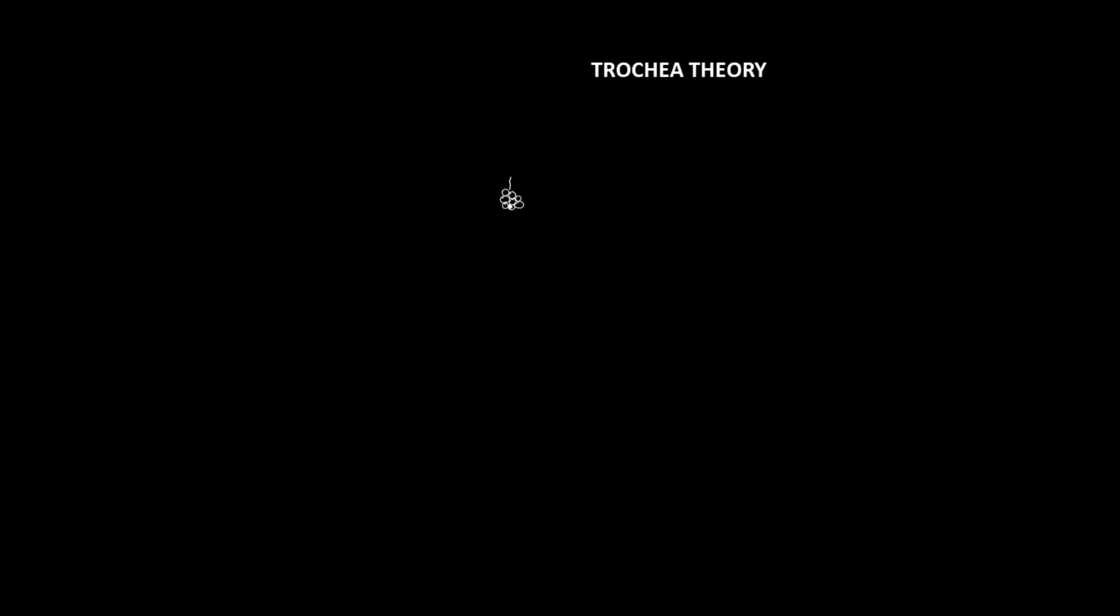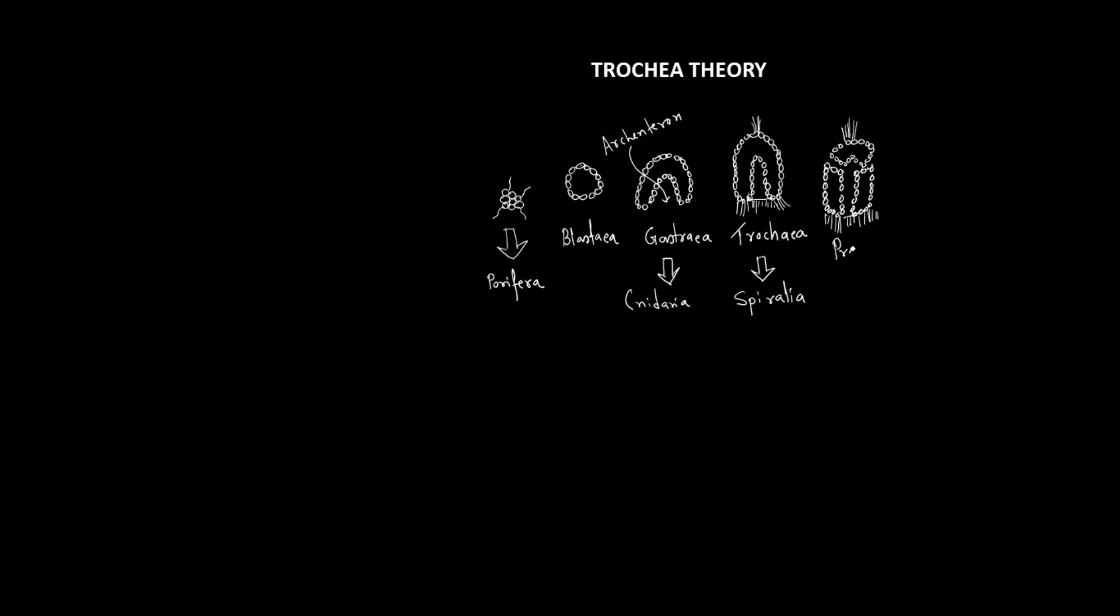Trochaea theory, one variant of gastraea theories that does avoid some of the problem areas has recently been advanced by Nielsen and Nørrevang, 1985. They suggest that a common monociliate gastraea stock gave rise directly to cnidaria and also via a trochaea stage with an equatorial ring of multi-ciliate cells to the remaining bilateral phyla. This occurred through trochophore larvae on the spiralian side and through a tornaria larvae on the deuterostome side. The latter forms, losing its multi-ciliation again.